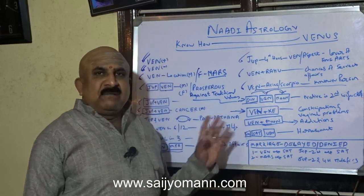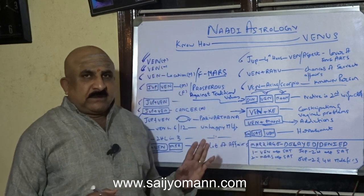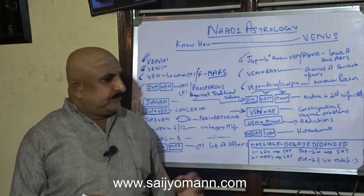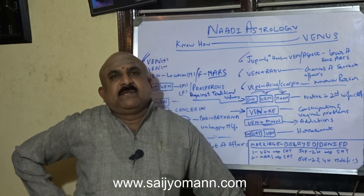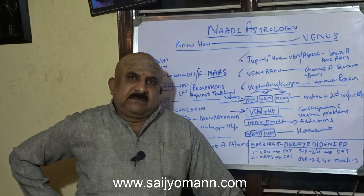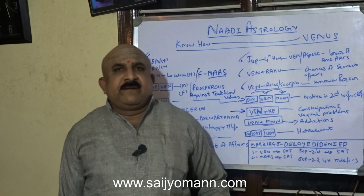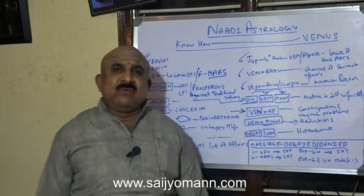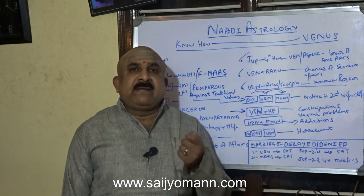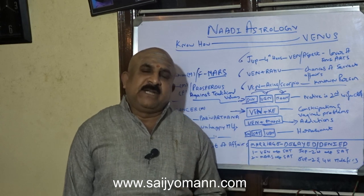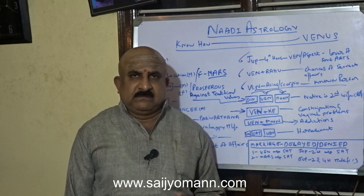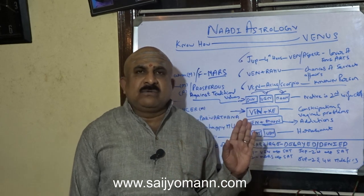Venus and Moon — this is one more combination. In immaterial of the chart, male or female, when there is a combination of Venus and Moon together, the native, he or she, may get into addictions. It may be drinking, it may be smoking, it may be anything. This is bound to happen.